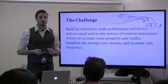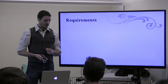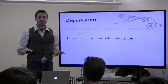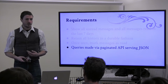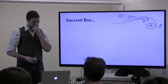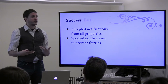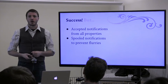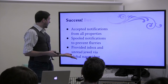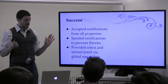The goal was increasing membership across roughly 20 properties. The requirements were: show all unread messages and all messages read in the last seven days, retain all message history durably, mark messages as read once seen, and make all querying available through paginated APIs that serve JSON. We successfully accepted notifications from every property, spooled notifications to prevent flurries — so if 3,000 people liked your photo, you didn't get 3,000 emails — and provided an inbox and unread message count jewel through a global nav widget.